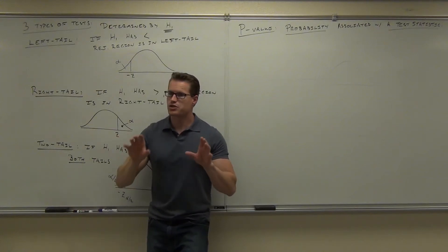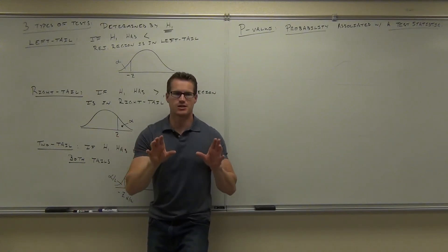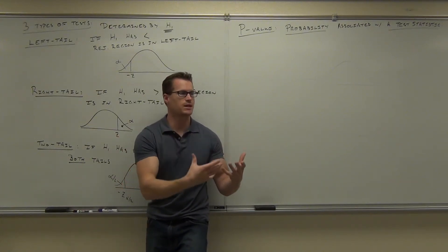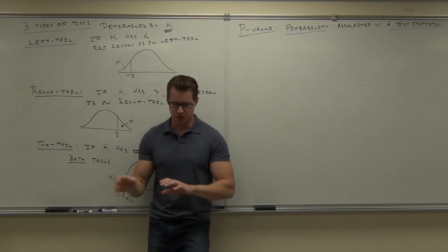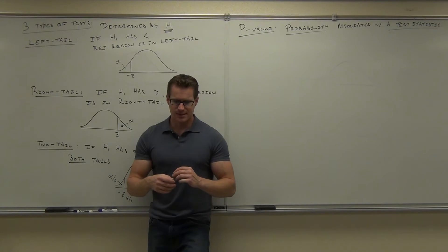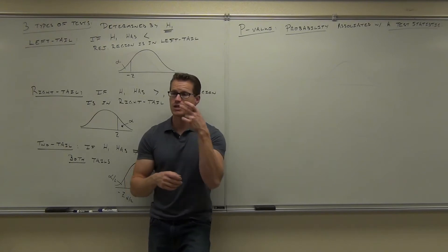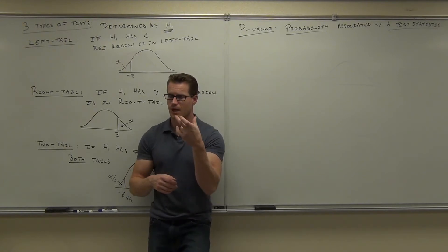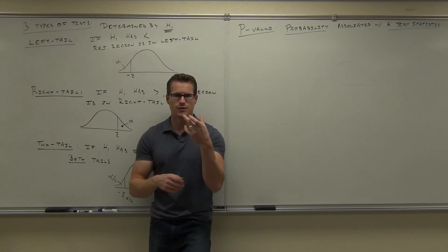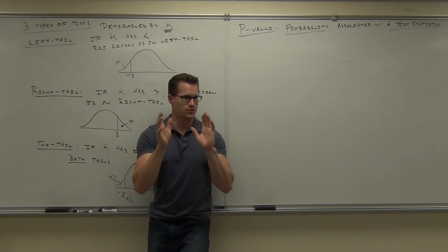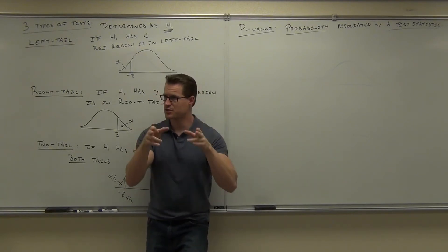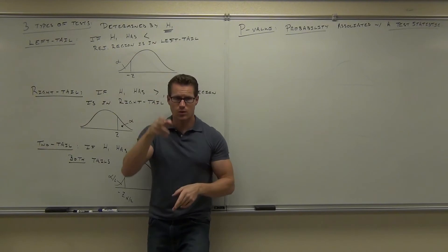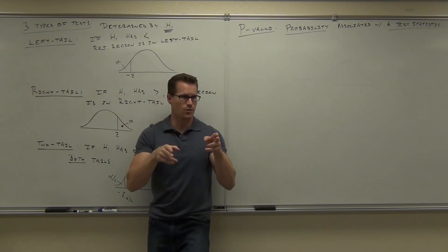The traditional method does this: you look at your significance level, and that's going to give you — based on a left-tail, right-tail, or two-tail test — your critical values. It separates your rejection region into either two, or left, or right tail.